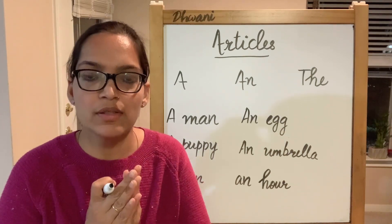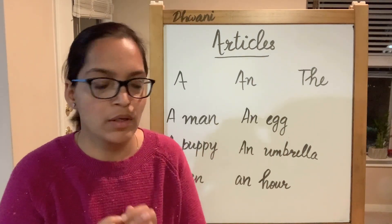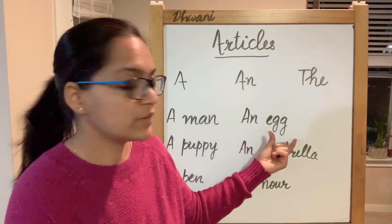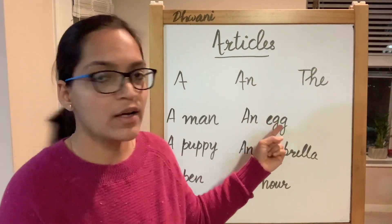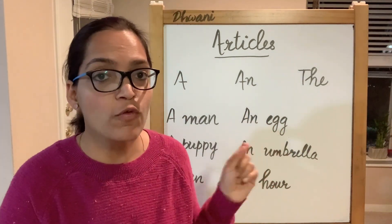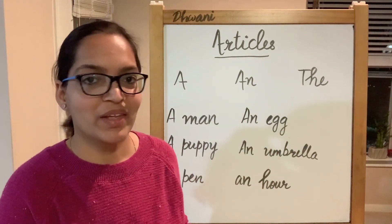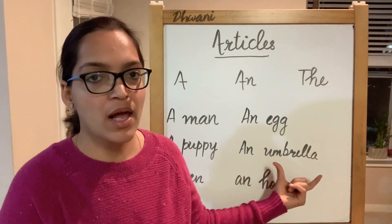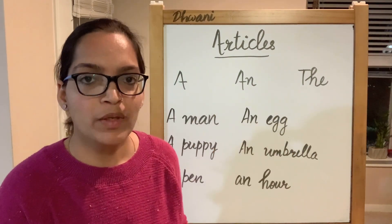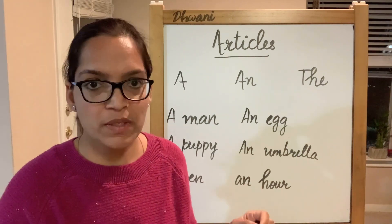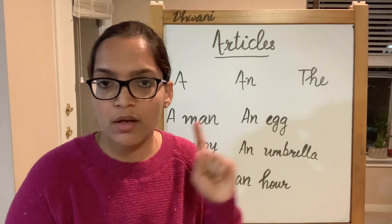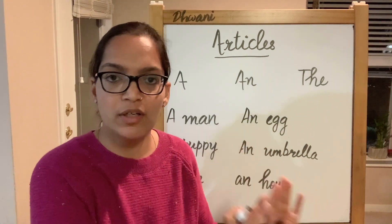We can use articles anywhere, wherever we have our nouns. Let's take examples of an. An egg — egg is a noun, it's singular, and it has a vowel sound, so we use an before it. Same thing goes for umbrella — it begins with a, it's a single umbrella pointing to a non-specific umbrella, and we are using an.